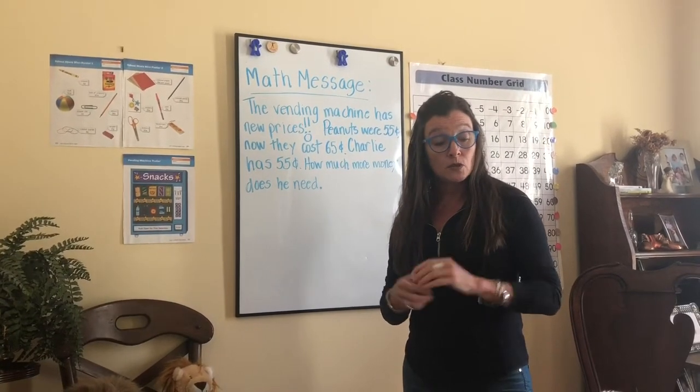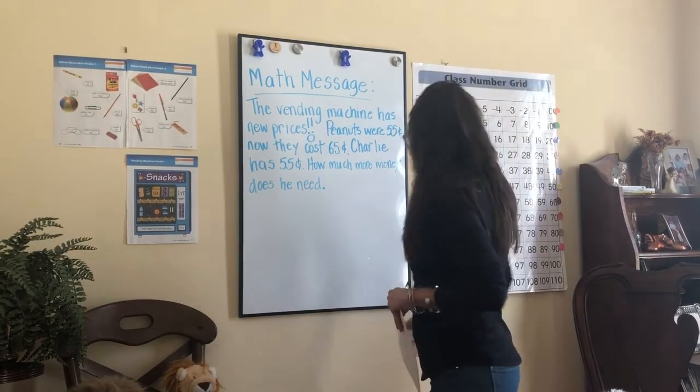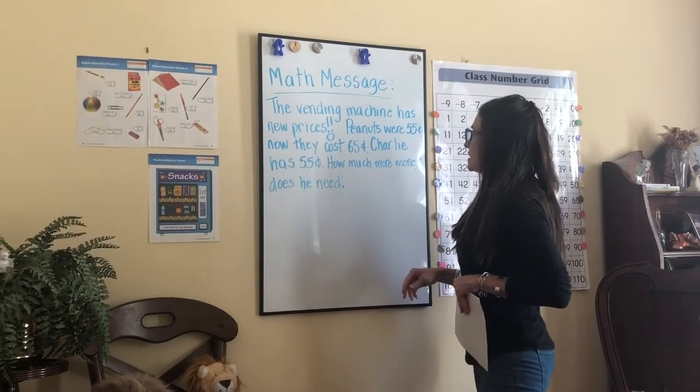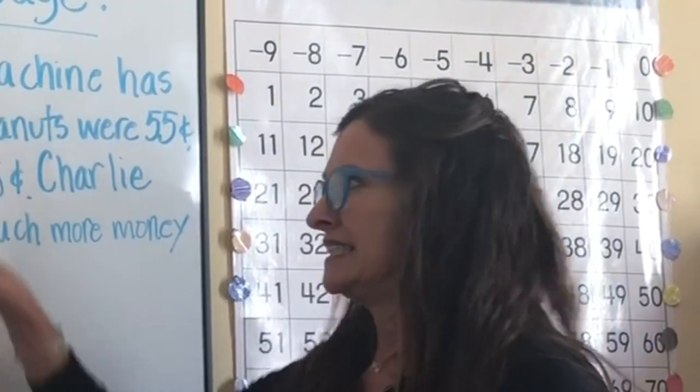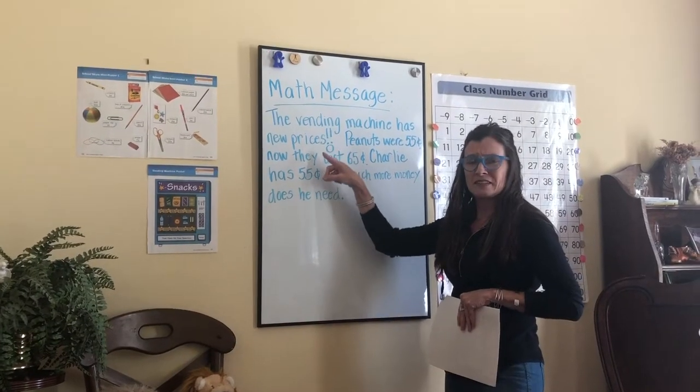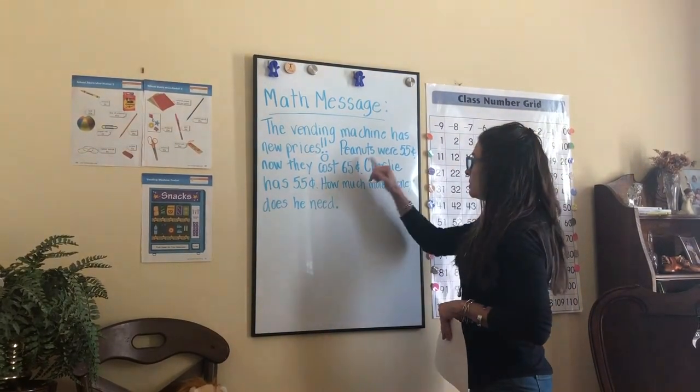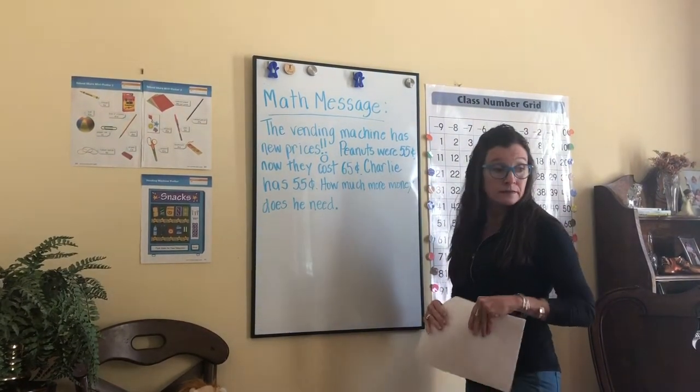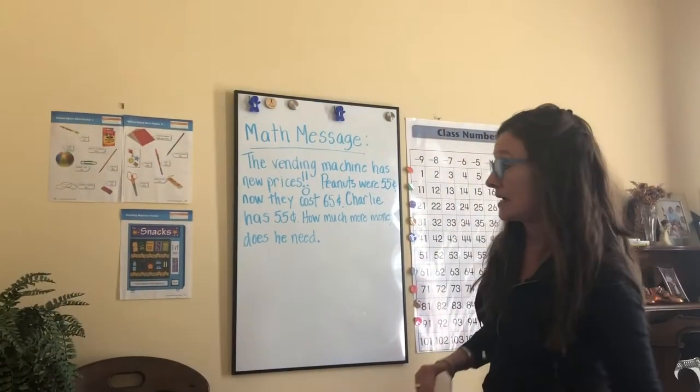Let's get started. Here we have a math message up on the board, and it says the vending machine has new prices. You see a little frowny face right there. The prices have gone up, more expensive. Peanuts for 55 cents, a can of peanuts in the picture, but it's just a pack in the vending machine.